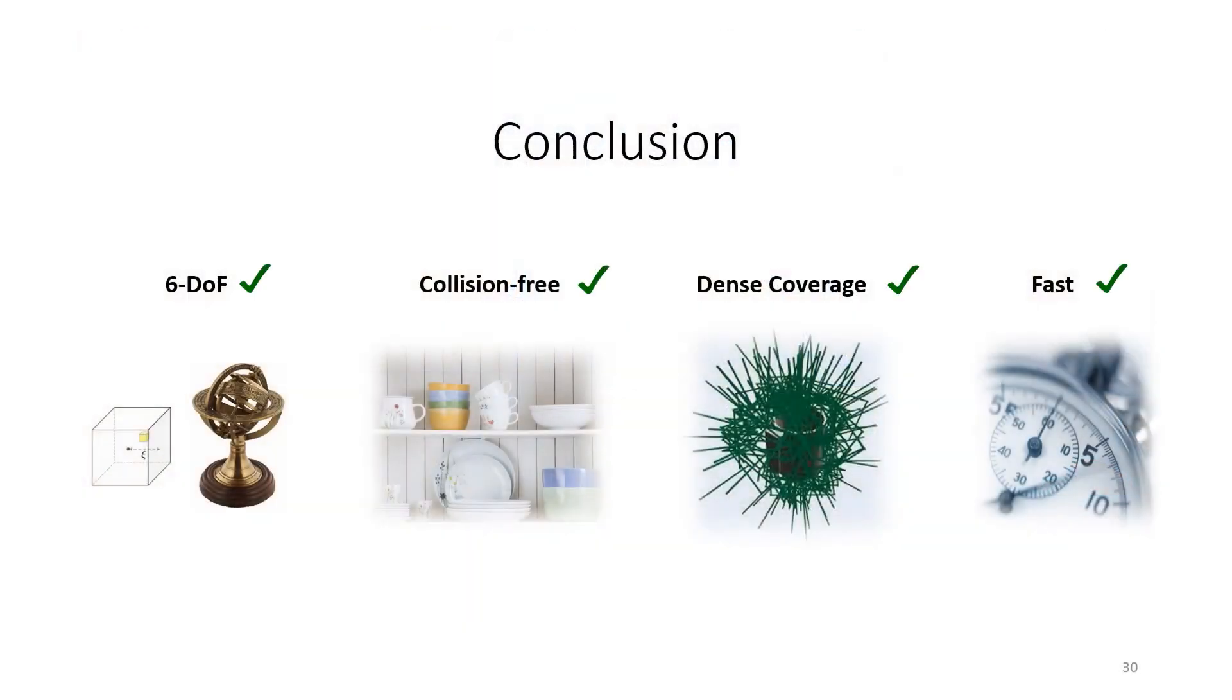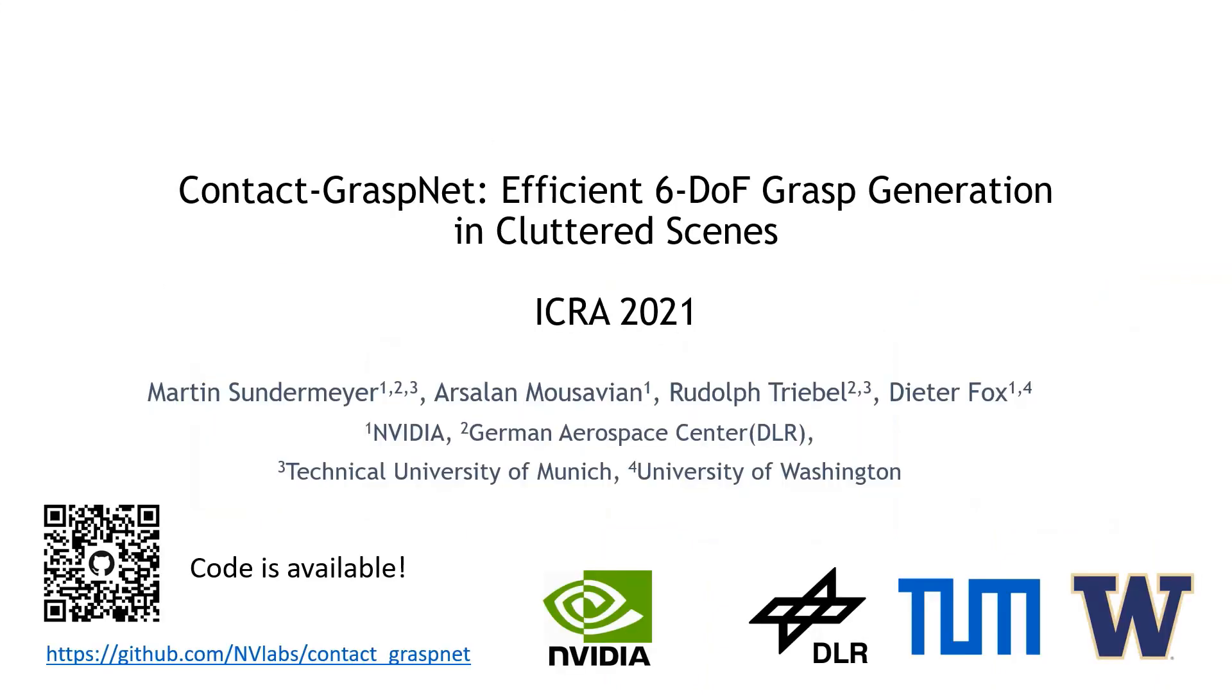So, in conclusion, our approach allows for generating collision-free, dense, 6DOF grasp distributions in near real-time. Thank you for your attention. Our code is available on GitHub and can be easily tested on new data, so please have a look. I also want to really thank my co-authors at NVIDIA that made this work and all the experiments possible. Thank you.